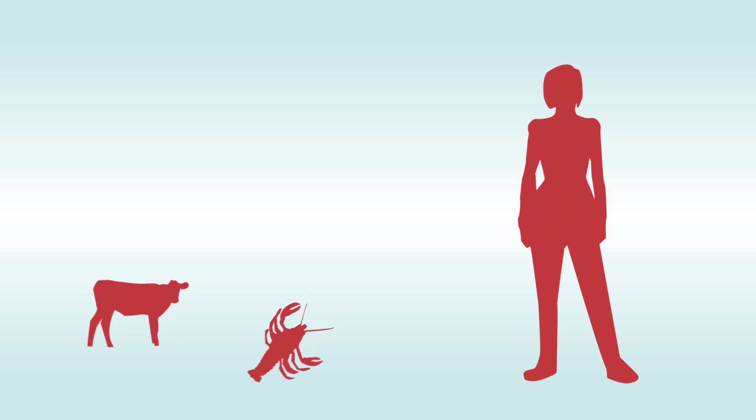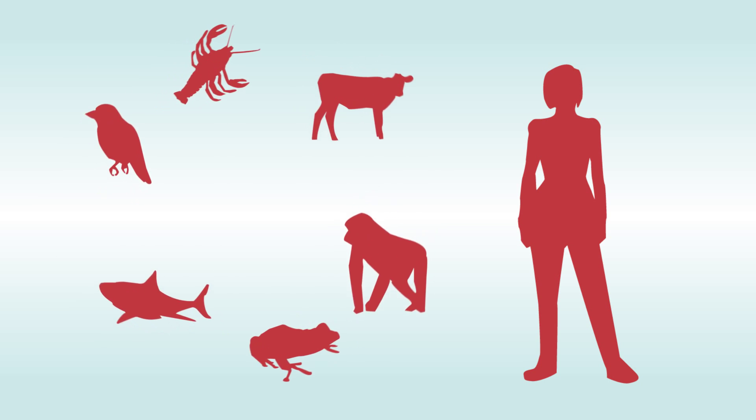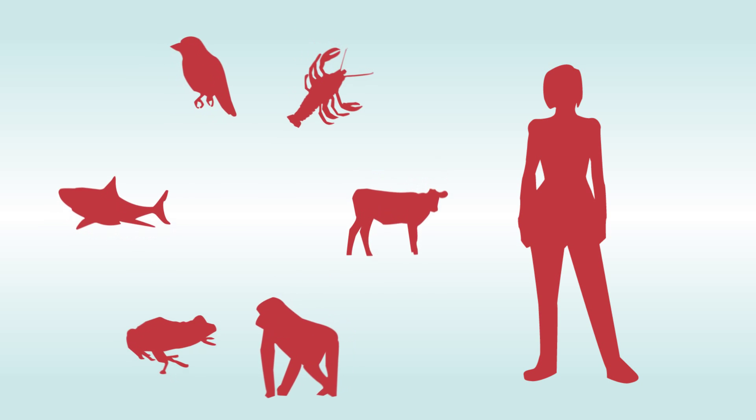The building blocks—adenine, cytosine, guanine, and thymine—that are found in human DNA are the same among all species, which allows scientists to compare how different species have evolved over time.